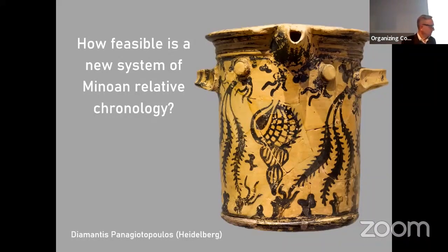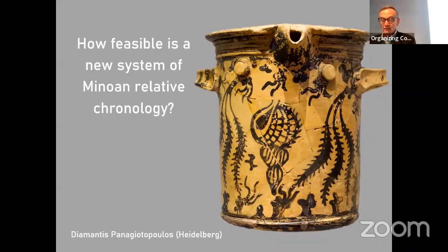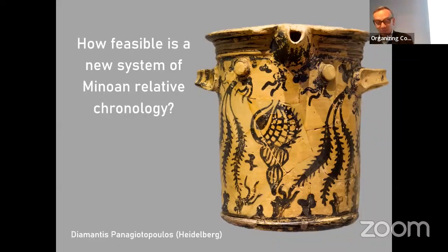Good morning everybody. Here we are on the second day of Kronos. The first paper looks extremely interesting. I look on with absolute horror at the idea of a new system of minor and relative chronology. But nonetheless, Amandis Paniotopoulos will now talk on how feasible is a new system of minor and relative chronology.